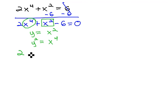We now have 2 times x to the fourth, which can be rewritten as y squared, plus x squared, which we can write as y, minus 6 equals zero. And that gives us a quadratic we can solve by factoring.